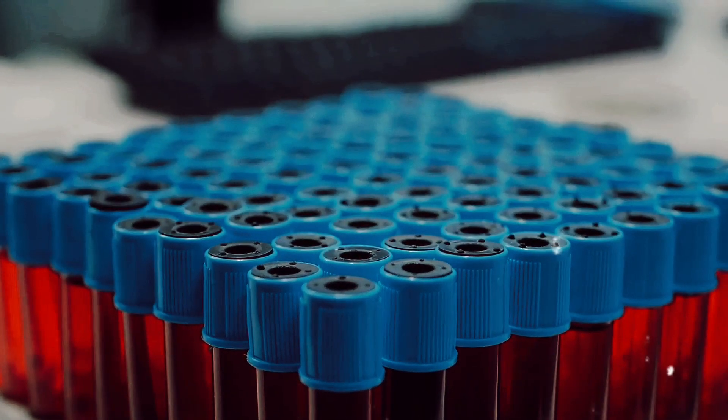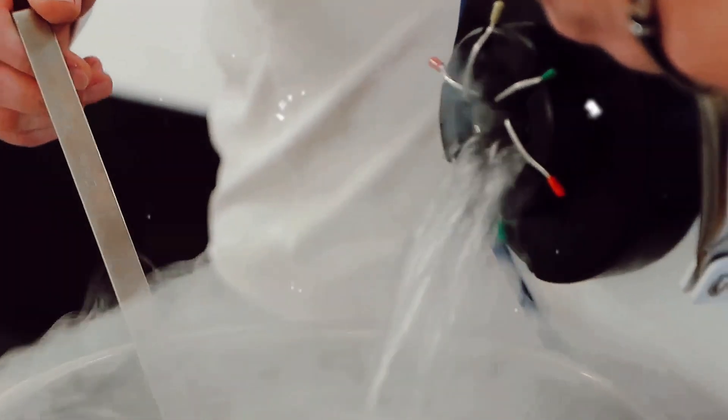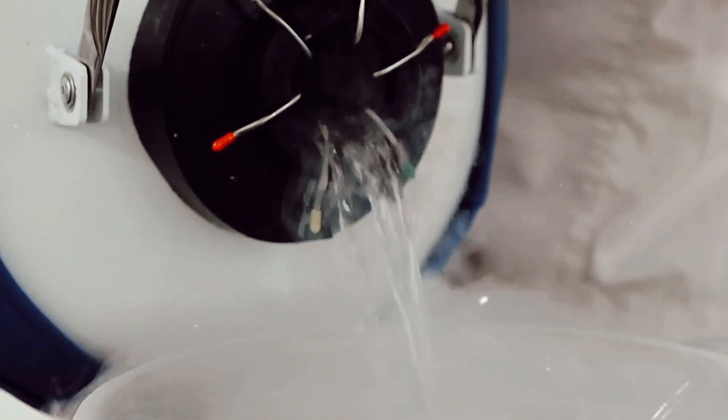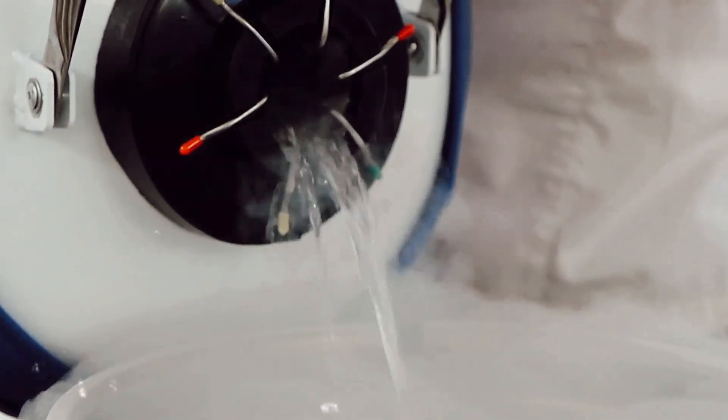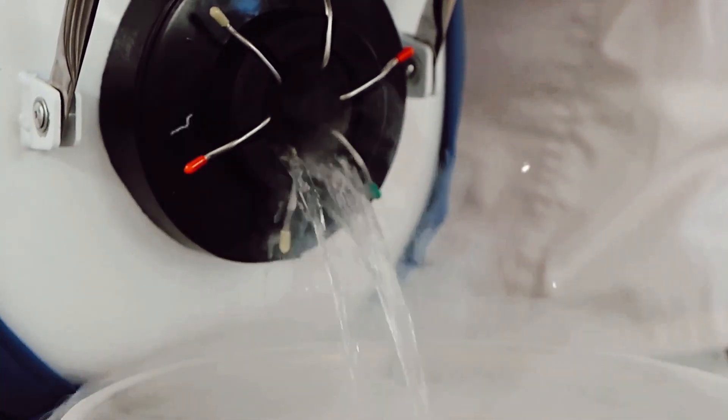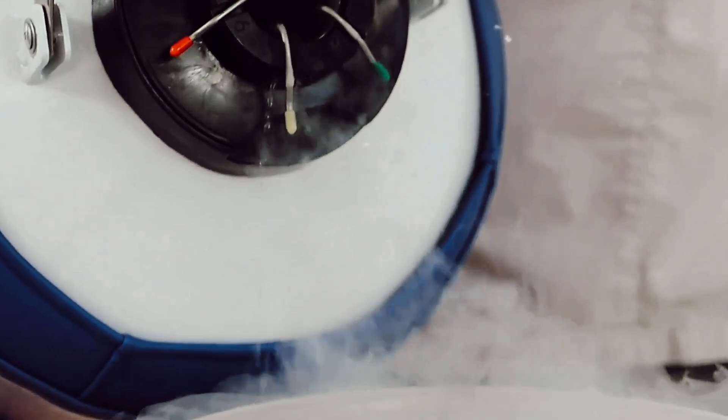The procedure begins immediately after legal death is declared. The body is cooled down to a temperature where metabolic processes come to a near halt, but decomposition does not set in. The blood is replaced with a medical-grade antifreeze to protect the cells from ice damage. The body is then gradually cooled to a temperature of minus 196 degrees Celsius, where it is stored in a container filled with liquid nitrogen.